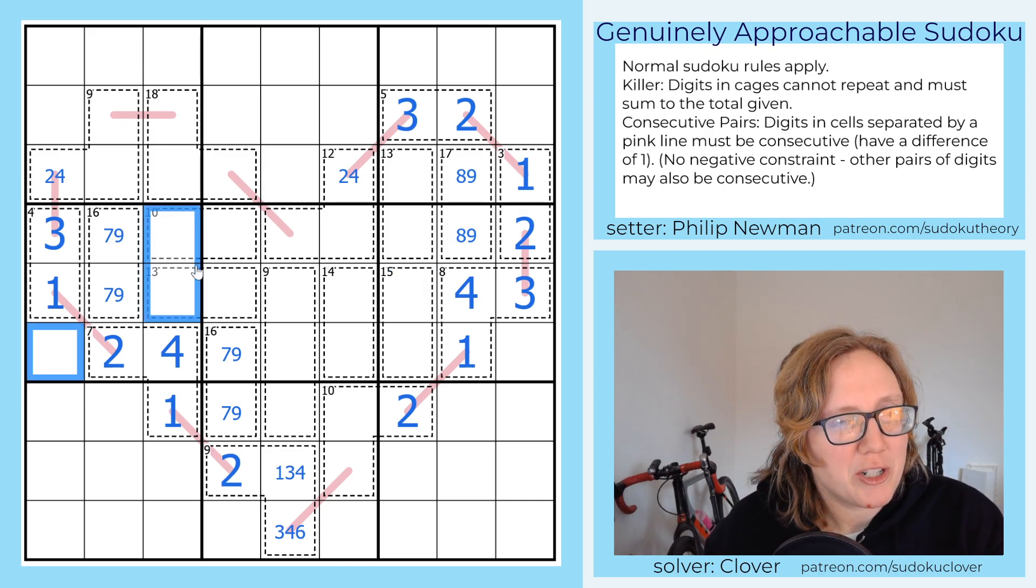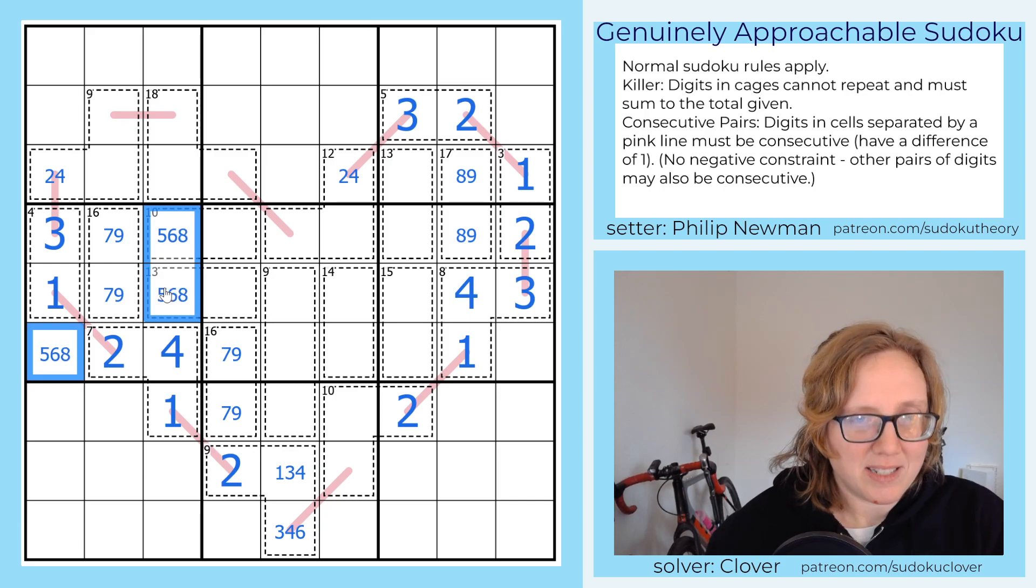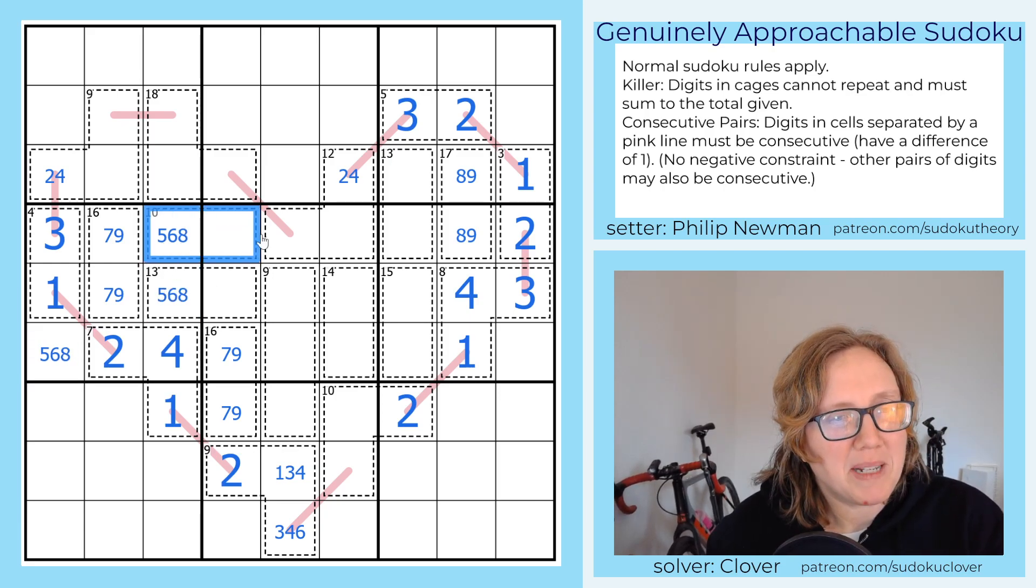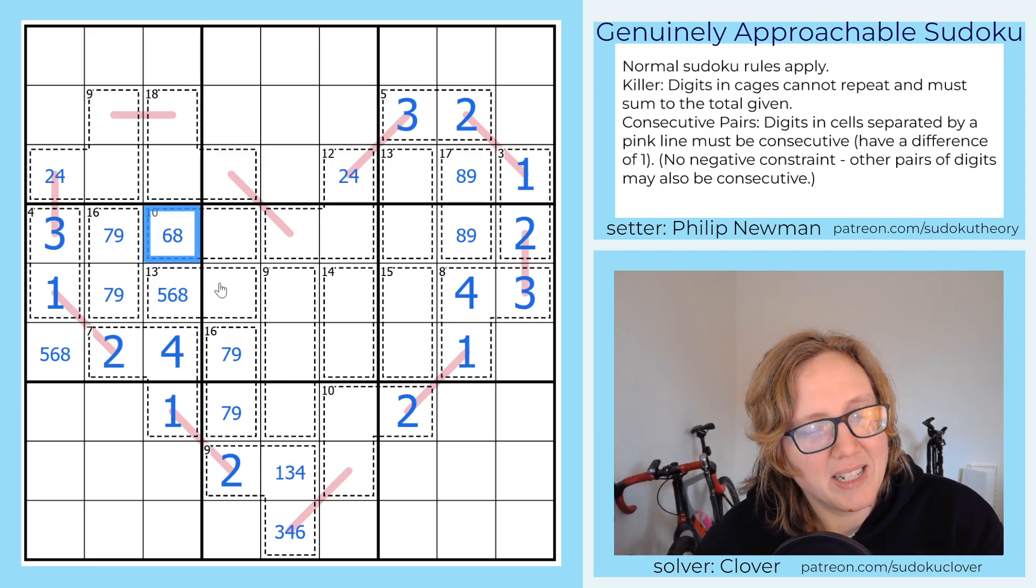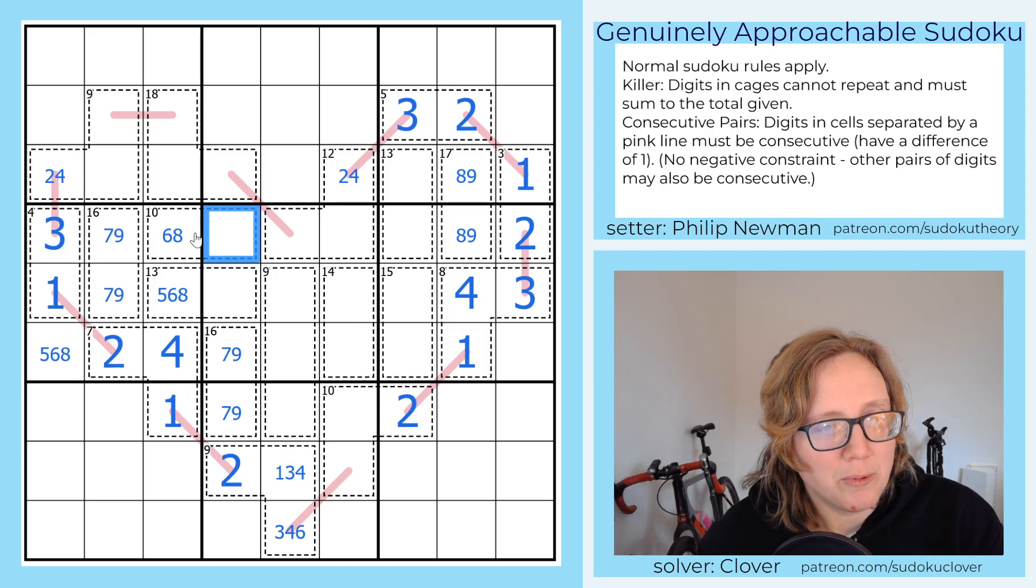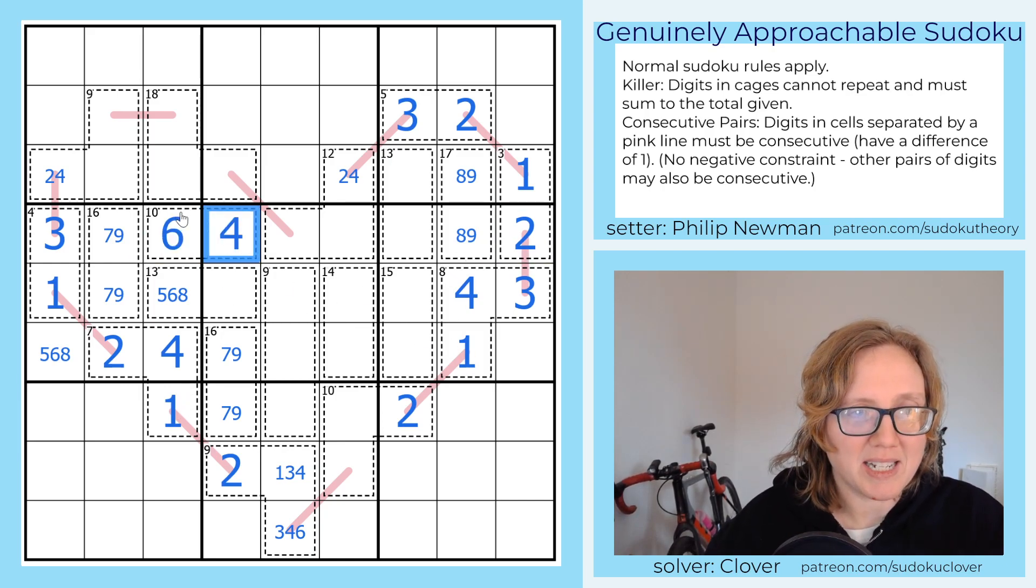Let's instead look over at this region because this is almost done. We only need five, six, and eight. This can't be a five because we can't place a five in a 10 cage like this. It would have to have two fives, which breaks. So that's either six or eight. Eight would go with two. Six would go with four. We already have a two in the row. So it's a six with a four.